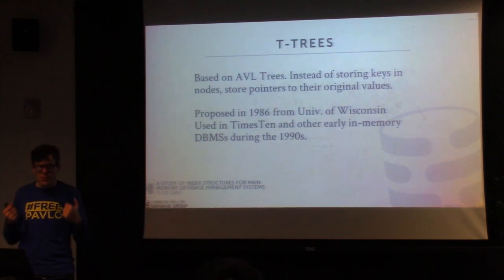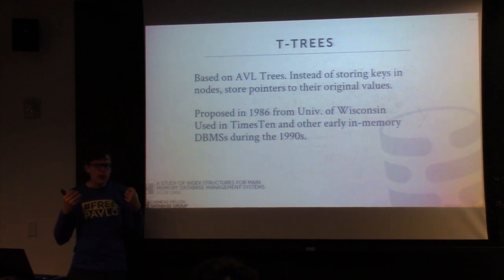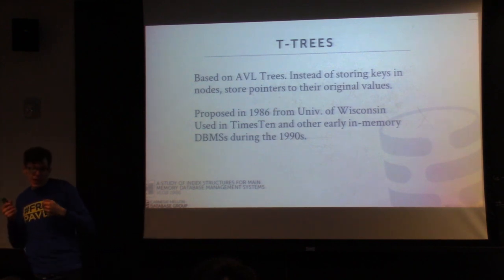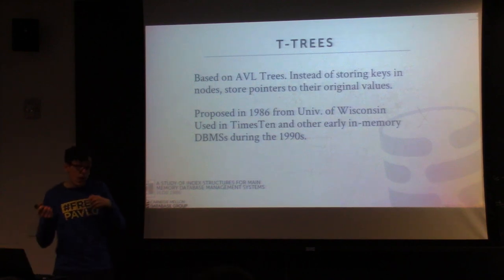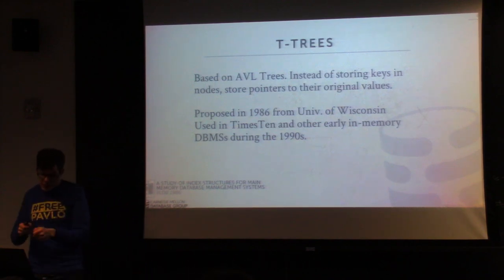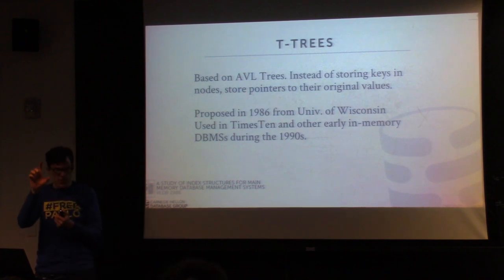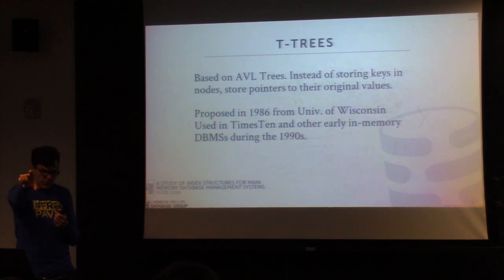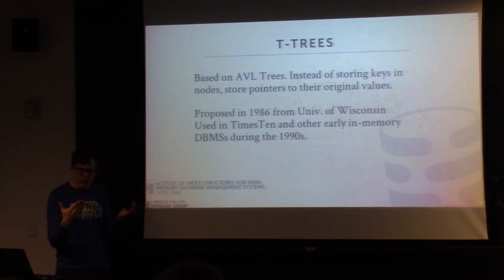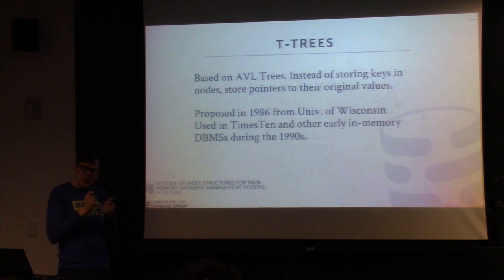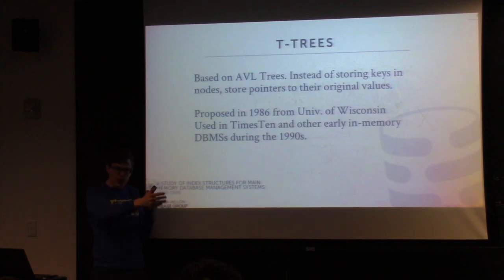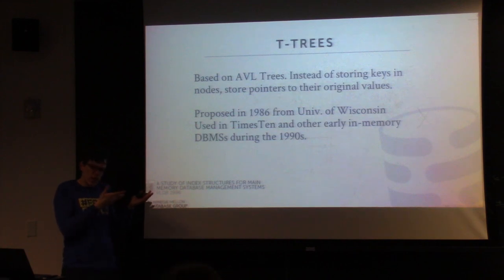T-trees were designed to be the data structure you'd want to use for an in-memory database. The key thing that distinguishes a T-tree from all the other indexes is that instead of storing the actual key values in the nodes inside the index, we instead store pointers to the tuples that have those values. So when we want to determine whether a key matches some entry in the index, we have to dereference the pointer to go to the tuple, find the attributes, and do the comparison that way — whereas in a B-plus tree or skip list, the key is actually copied into the index itself.